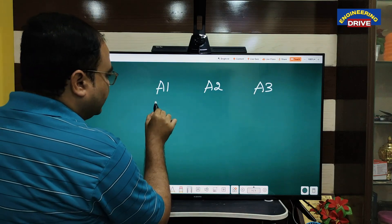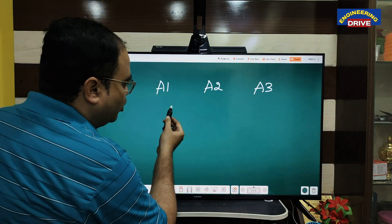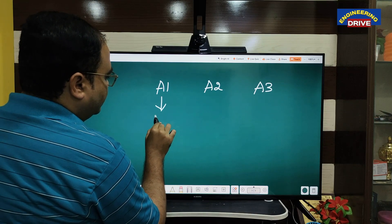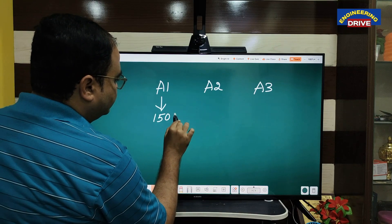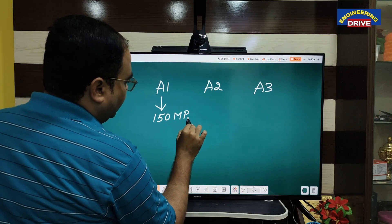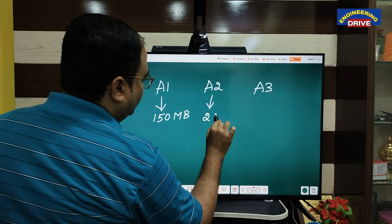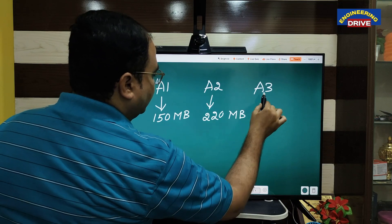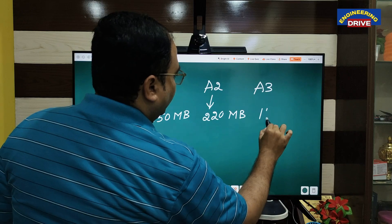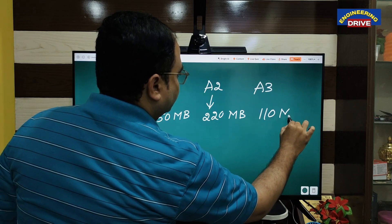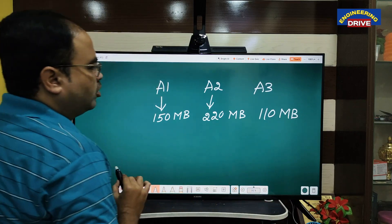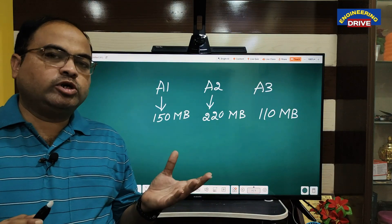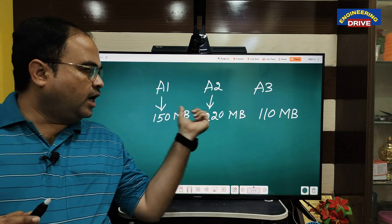Algorithm one — when we convert this into a program it will take 150 MB. Algorithm two will take 220 MB, whereas algorithm three will take 110 MB. Now as a manager or team leader I need to make a decision.